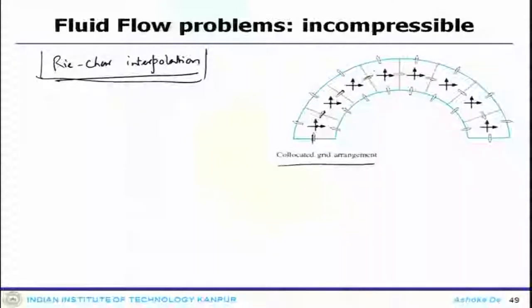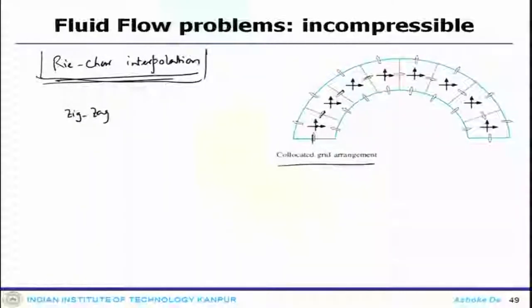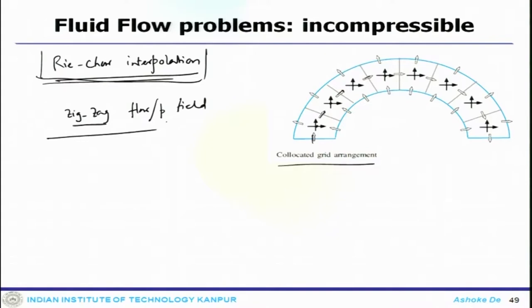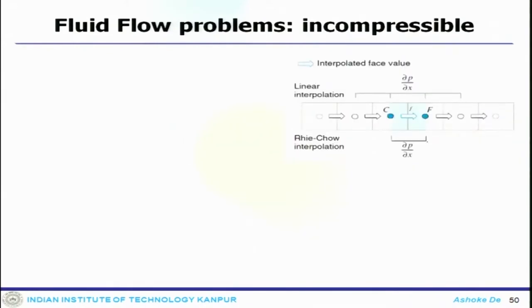Using Rhie-Chow interpolation, you have everything at the cell centre in a cell-centre collocated arrangement, and then using this interpolation scheme you get the fluxes interpolated at the faces, so that you can avoid the checkerboard problem. The deficiency in the original collocated formulation — primarily the checkerboard or zigzag flow field and pressure field — can now be avoided using this interpolation. One can see how this arrangement is essentially equivalent to a staggered arrangement in a one-dimensional case where everything is stored at the cell centre and flux components are computed using Rhie-Chow interpolation.